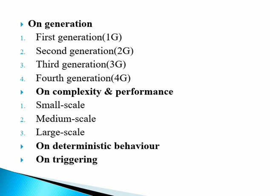Third generation embedded systems, with advances in process technology, were more powerful, using 32-bit processors or 16-bit microcontrollers. New concepts of application and domain-specific processors like DSPs (Digital Signal Processors) and ASICs (Application Specific Integrated Circuits) were introduced. The instruction sets were more complex, incorporating instruction pipelines. These dedicated embedded systems were real-time and used general-purpose operating systems, applied in robotics, media, and industrial processes.